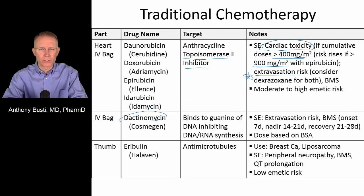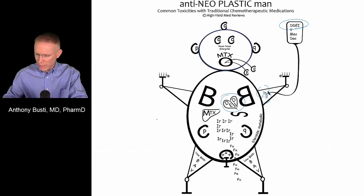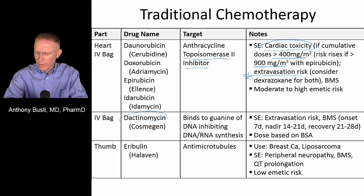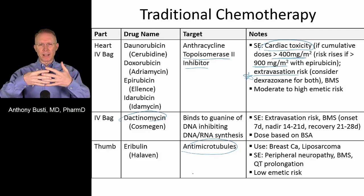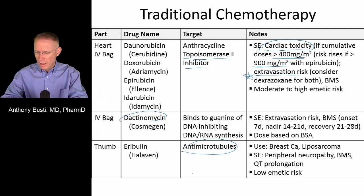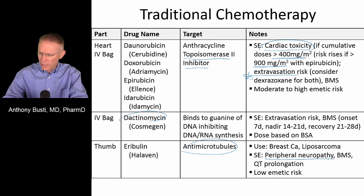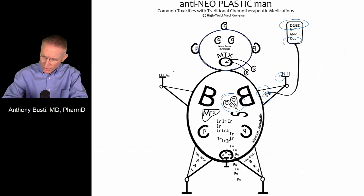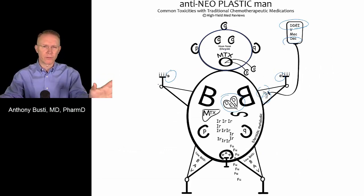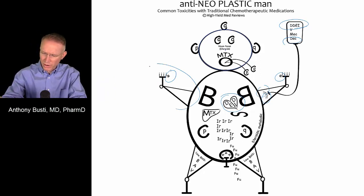Dactinomycin is another drug with extravasation risk, represented on the IV bag on antineoplastic man. Eribulin works on microtubules, which are necessary for mitosis — specifically for pulling chromosomes apart to create two new cells. When microtubules are blocked, mitosis cannot occur. One of the dose-limiting toxicities is peripheral neuropathy. The letter E on the hands and feet of antineoplastic man reflects peripheral neuropathy. All the different letters shown on the extremities of the figure represent drugs that cause peripheral neuropathy, some worse than others.